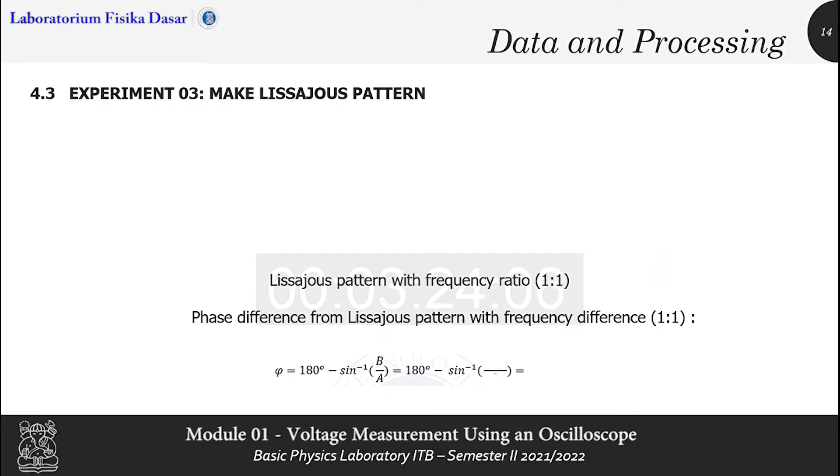For the third experiment, make Lissajous pattern. You have to draw a Lissajous pattern that is formed on the oscilloscope. Then, calculate phase difference by entering the values of B and A contained in the oscilloscope into the following equation.